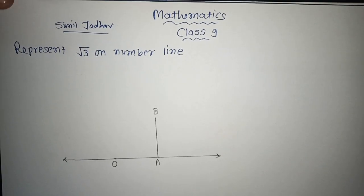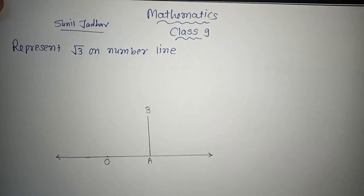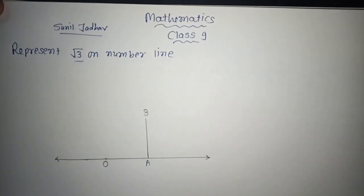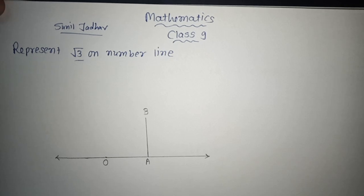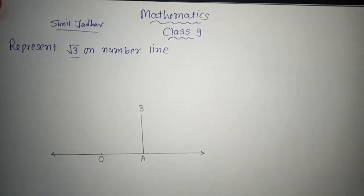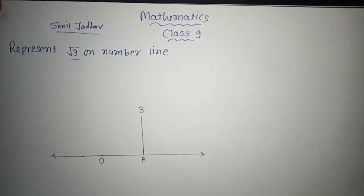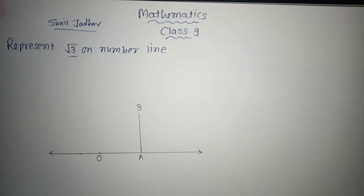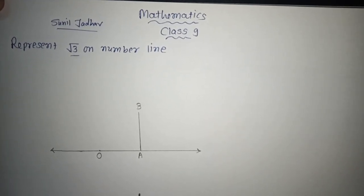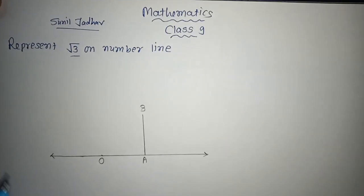Hello friends, welcome back to my channel. Here we are going to learn one important thing: how to represent under root 3 on the number line. This is one of the important constructions to represent an irrational number on the number line. We know the value of root 3 is approximately 1.73, but if it is given in the format of root, how do you represent it directly on the number line? That is what we are going to learn in this session.